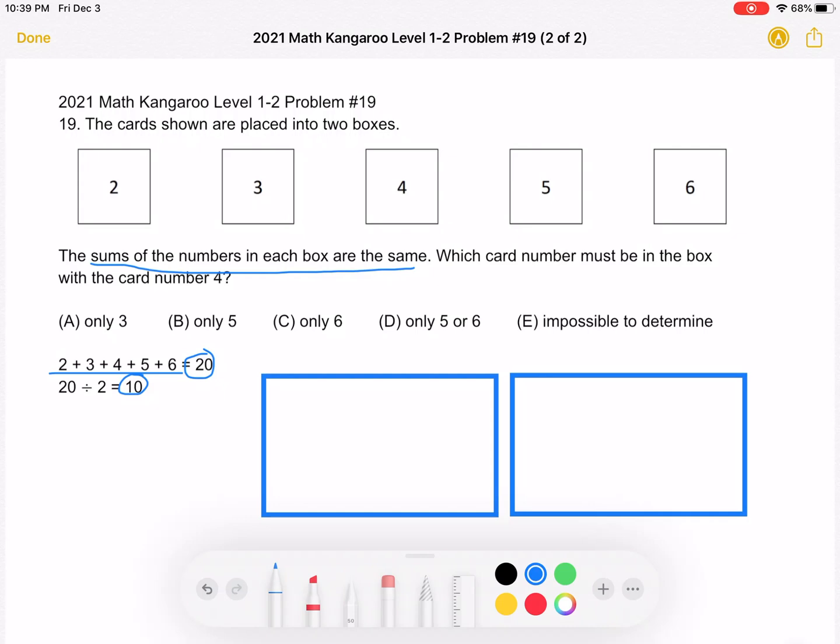So, if we have the number 4 in one of the boxes, we need to think what other number plus 4 is equal to 10. So, 4 plus question mark is equal to 10. Well, question mark is equal to 6. So, 6 should be the other number.